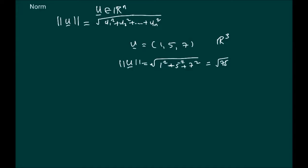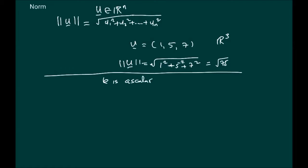Let's look at some quick properties associated with the norm. Assuming that the vector u belongs to Rn and k is a scalar, the following properties hold. First, the norm of the vector u is always greater than or equal to 0, which means it's always positive. Going back to geometrical ideas in R2 and R3, size is always positive — it is not negative. All norms are, in fact, positive.